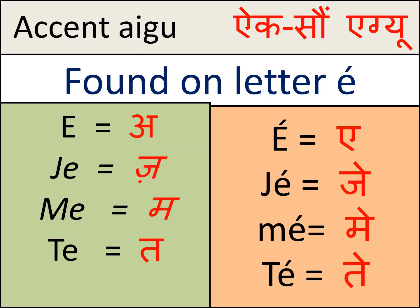The accent aigu is always found on the letter 'e' — no other letter will take an aigu. You can see a small slanting line on top of the e, going upward to the right. You have to write it this way. This is the sign, the symbol, of the accent aigu.